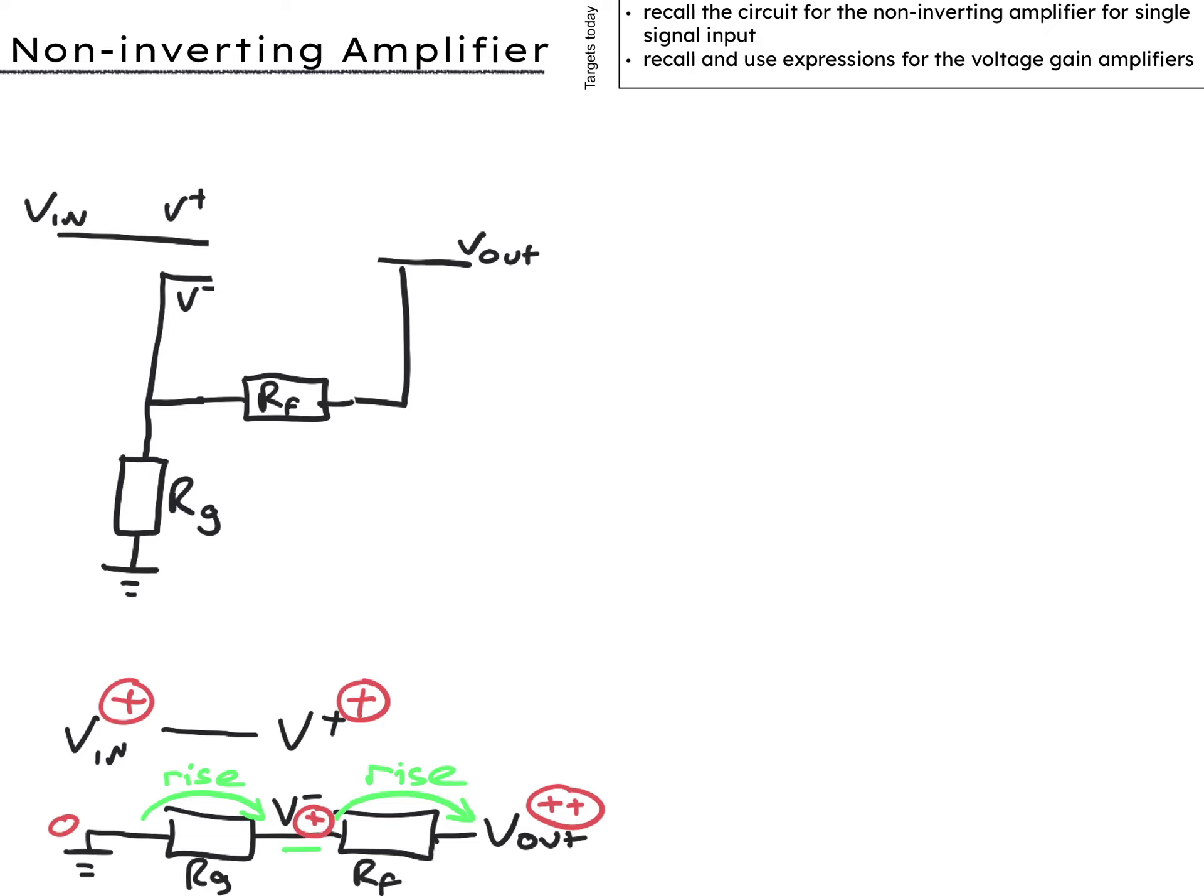If we change it around if we make V_in negative so this point is negative here now. Then we have a voltage drop across Rg and another voltage drop across Rf so V_out is negative. It's a non-inverting amplifier because the output has the same sign as the input.